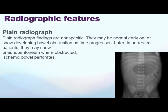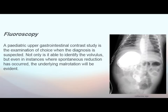Radiological features of midgut volvulus include plain X-ray findings, but these are not specific. As the condition progresses, some features may show. In untreated cases we may see pneumoperitoneum as the ischemic bowel perforates. Another very important investigation is fluoroscopy — we give contrast to the pediatric patients and perform fluoroscopy. It is the examination of choice in pediatrics, and it is important because it not only identifies the volvulus but also tells us if malrotation is present or not.